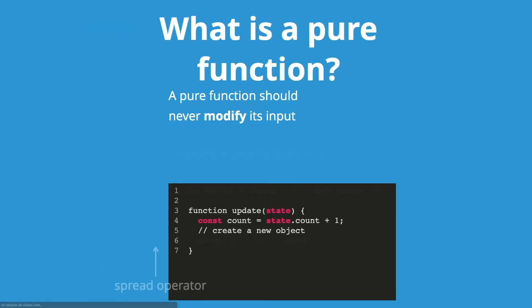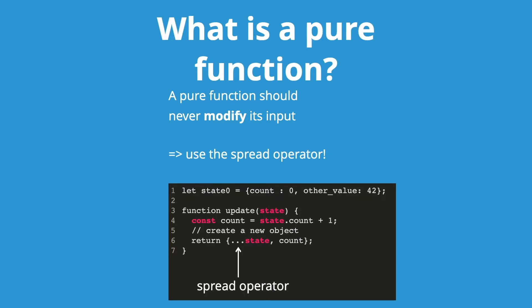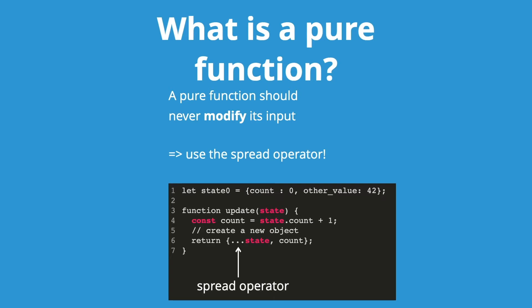The way to do this properly is to produce a new state which has the same value for each field. We create a count value and return a new object with a count field, so the original state is not modified. For a more complex state — for example, one with a count equal to zero and another field with a value of 42 — we can create the new object with the spread operator, deconstructing it and only setting the field that has been changed.